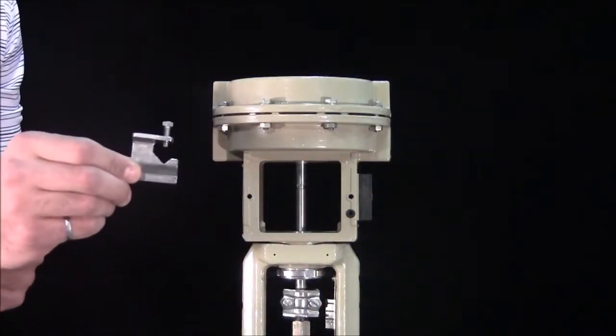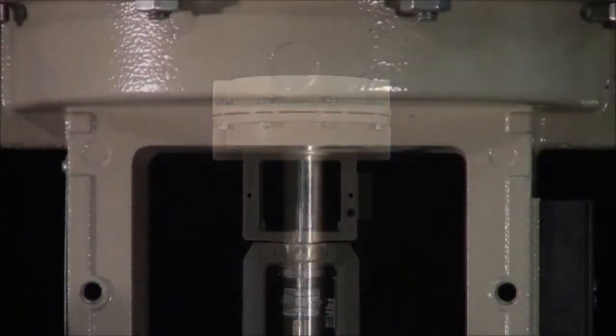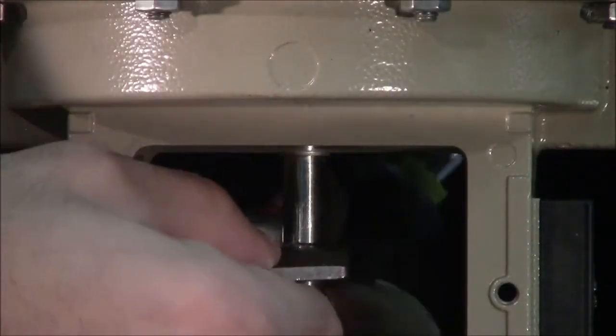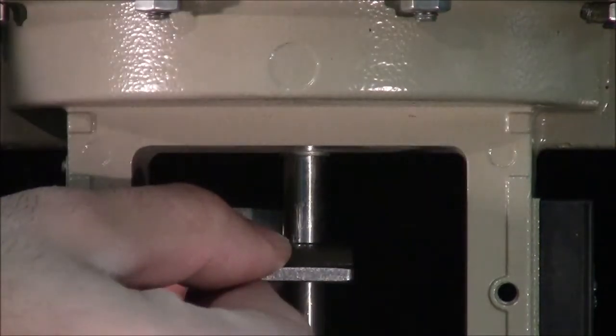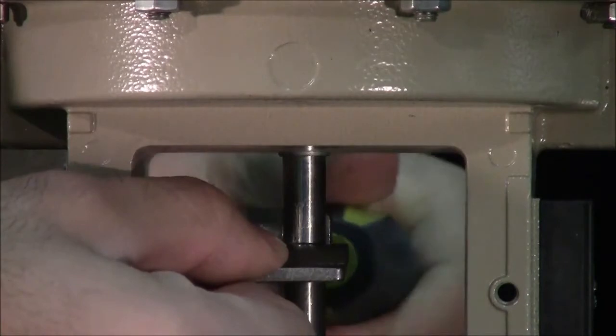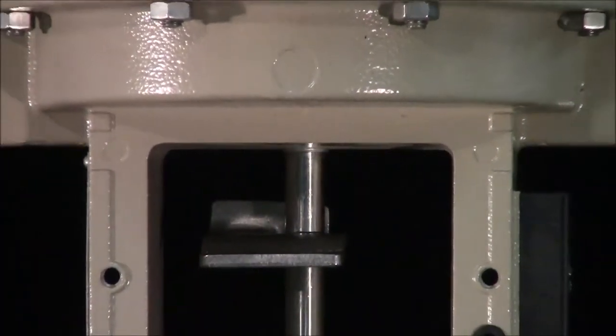We'll begin by attaching the follower clamp to the actuator stem, making sure the screw is located in the grooved area. The clamp is installed with the opening on the right-hand side.